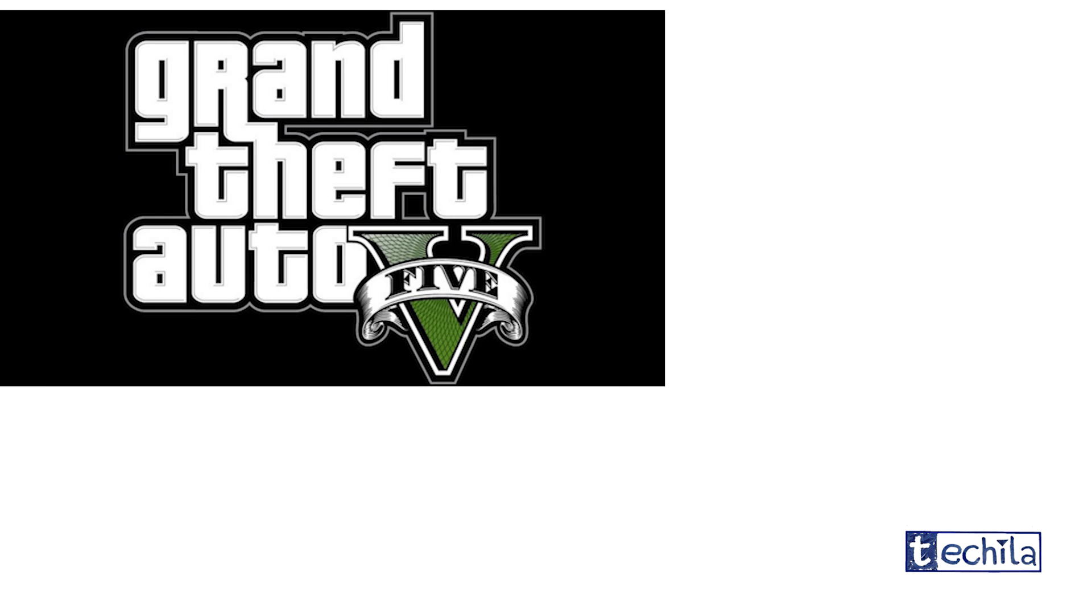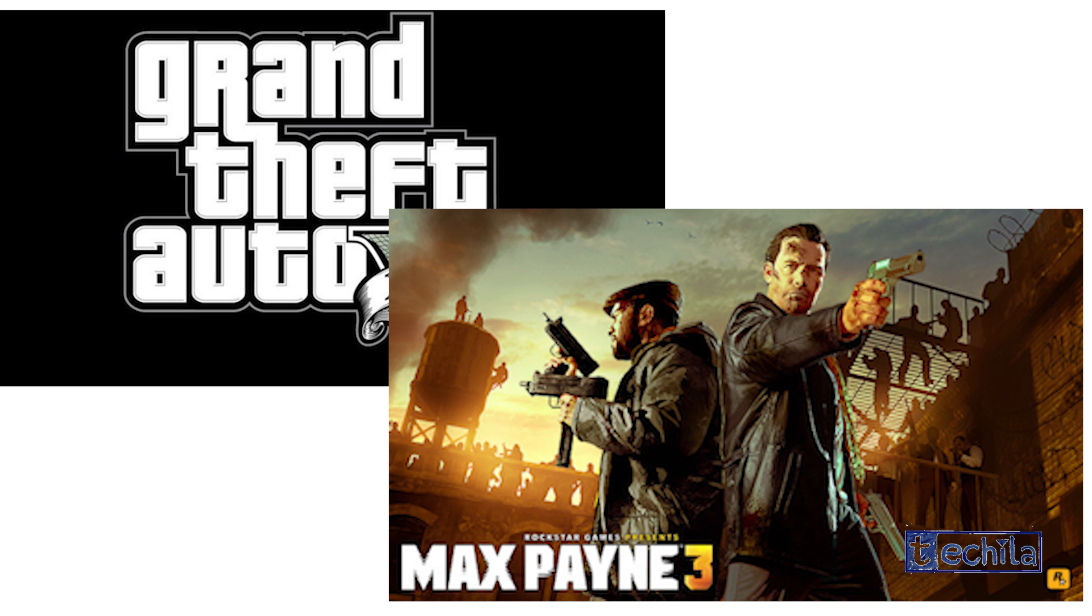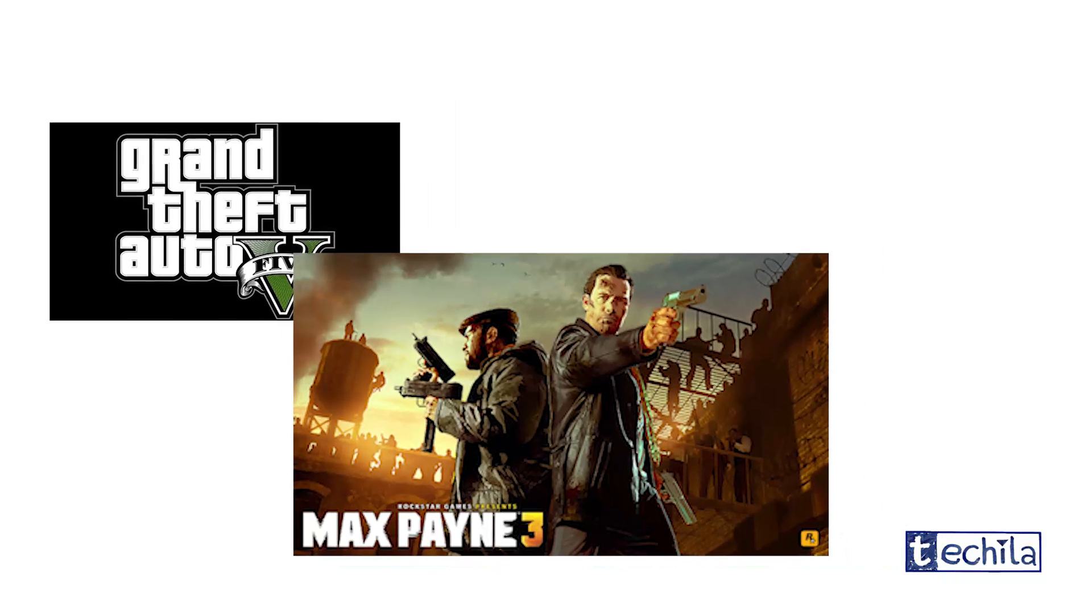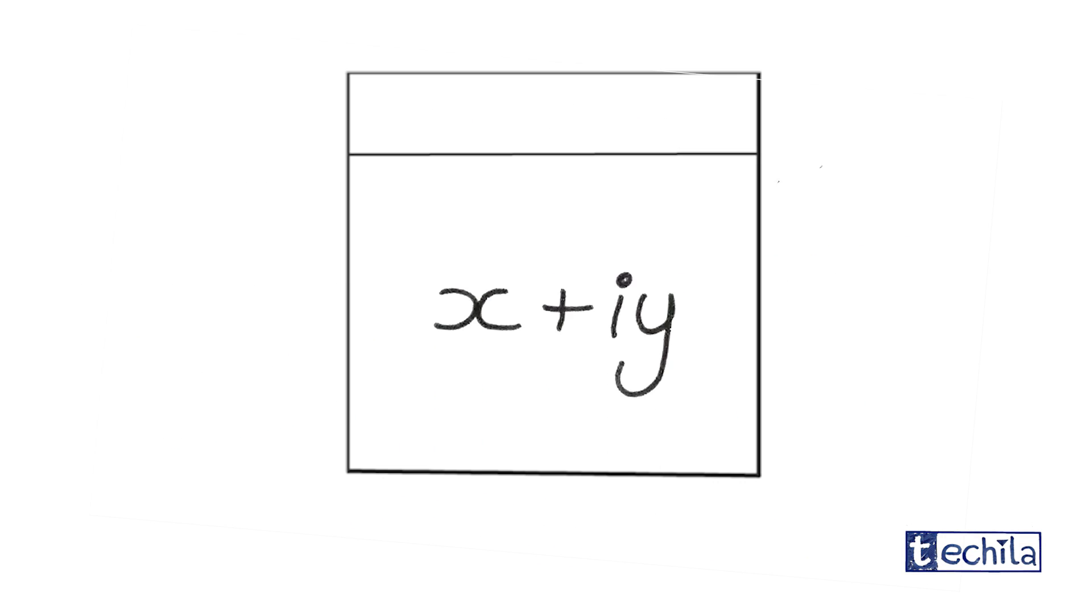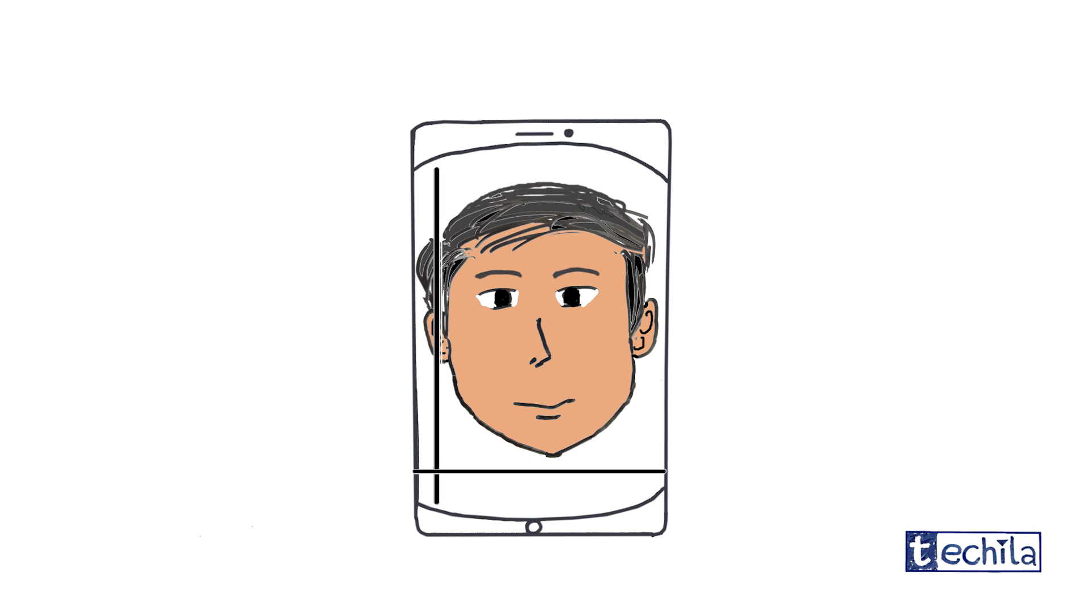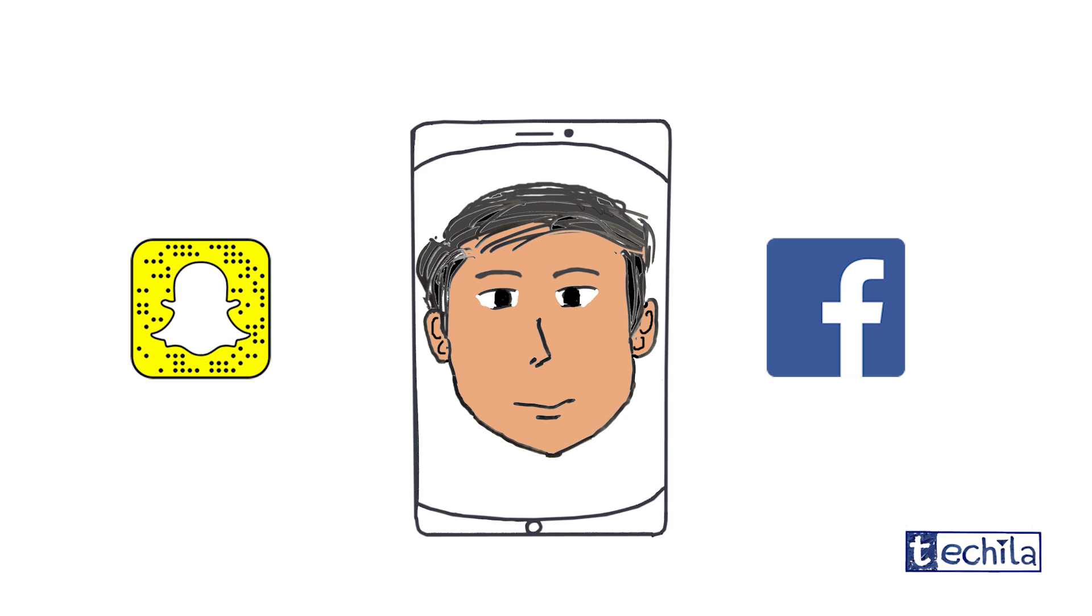Big games like GTA 5 and Max Payne that you can download via internet can only be compressed by algorithms which extensively use complex numbers and their properties. Even the image processing and image recognition techniques used by Snapchat and Facebook are possible only by using complex valued functions.